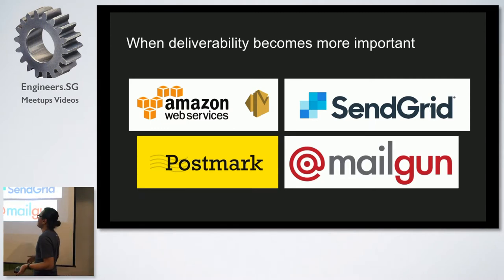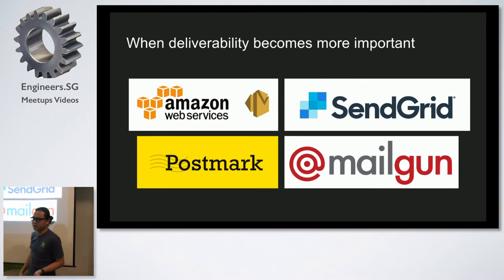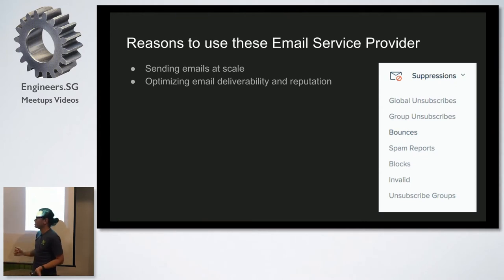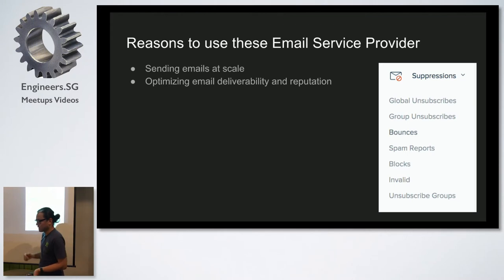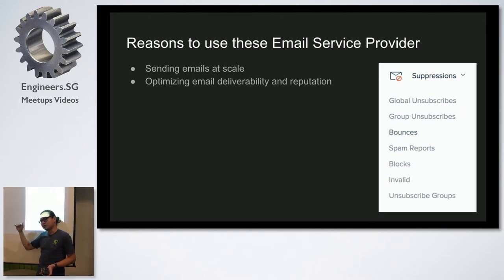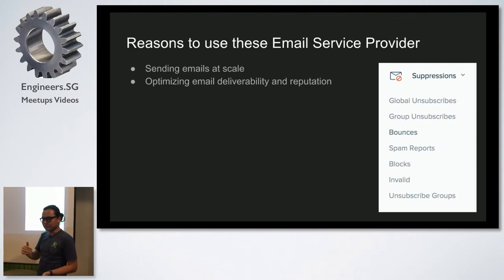When deliverability becomes more important, you look at services like AWS SNS, SendGrid, Postmark, or Mailgun. The reason you go to these services is because if you want to send 10,000 emails a month, their service is really good at doing that. They also optimize your deliverability and email reputation. For example, if they know that an email address will likely mark your email as spam, they will pre-block that email. SendGrid has suppression lists — things like spam reports, blocks, and invalid addresses — and if an address is on the suppression list, they just won't send to it, keeping your email reputation intact.